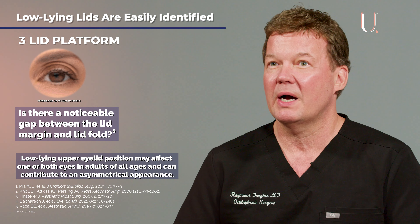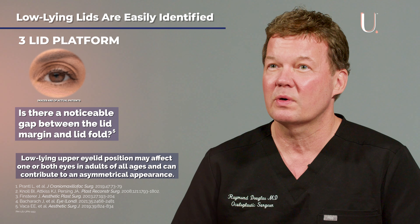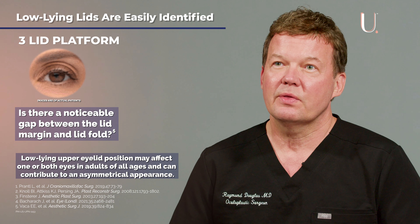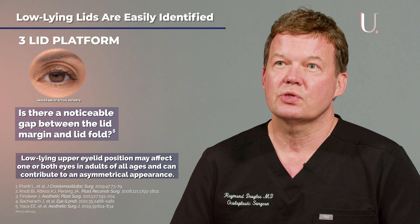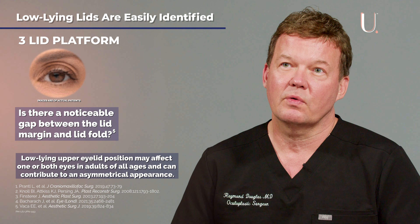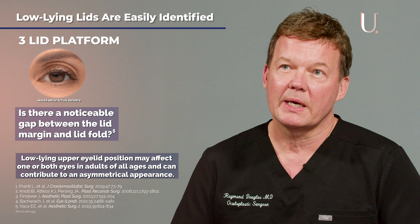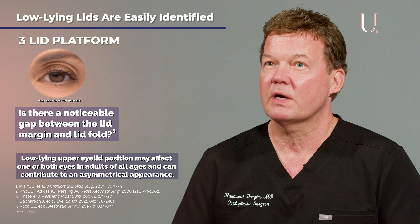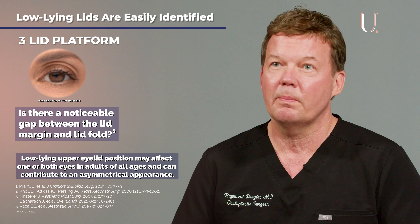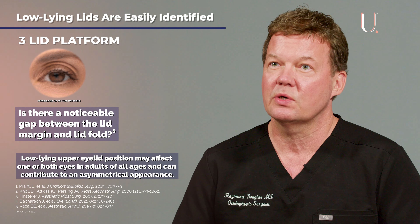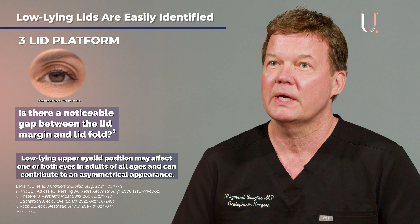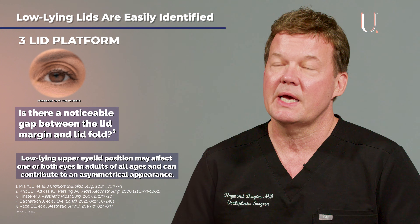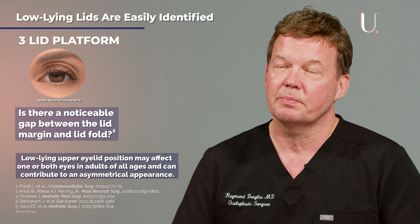There is a more distinct upper eyelid platform showing. These are things you should start looking for, and keep in mind that low-lying eyelids may affect one or both eyes in adults of all ages and can contribute to an asymmetrical appearance.